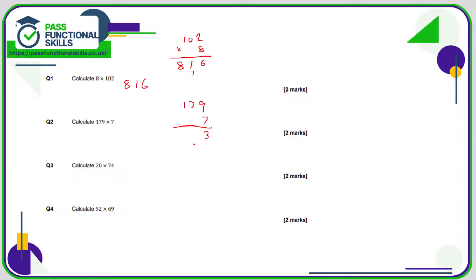179 times 7: put 179 on the top and 7 on the bottom. 7 nines are 63, 3 carry 6; 7 sevens are 49, plus 6 is 55, so 5 carry 5; 1 times 7 is 7, and 7 plus that 5 is 12 — so the answer is 1253.